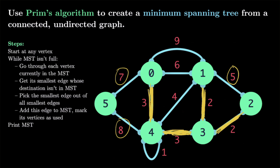We shade in that 2-cost edge, add vertex 2 to our used vertices, and consider edges going out from 2. Before continuing, we remove the 5-cost edge because adding it would create a cycle between 1, 2, and 3. That leaves edges costing 7 and 8 — 7 is cheaper, so we pick it, shade it in, and add vertex 5. Now we've added 0, 1, 2, 3, 4, and 5 — all vertices used — so this is our final MST.